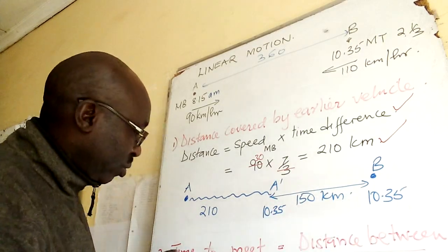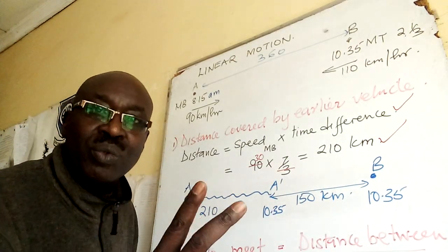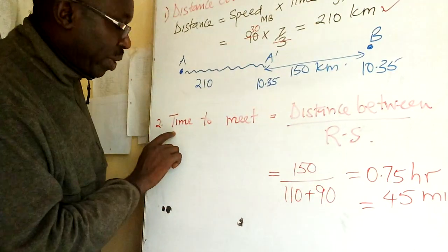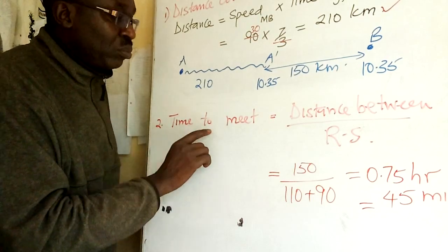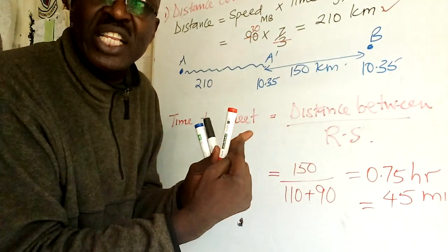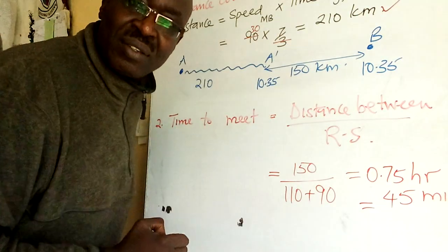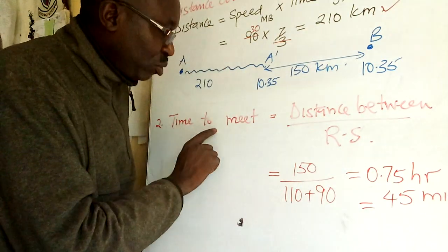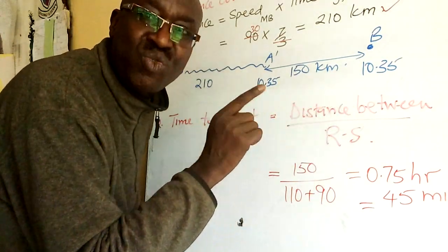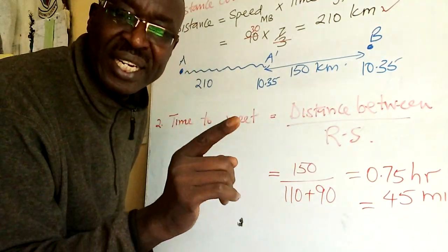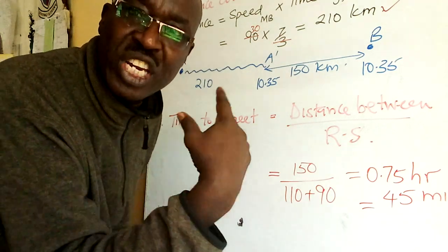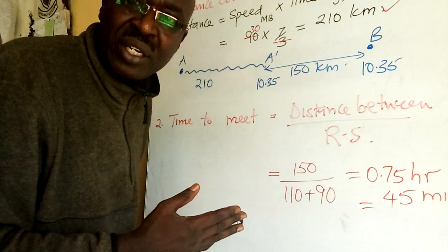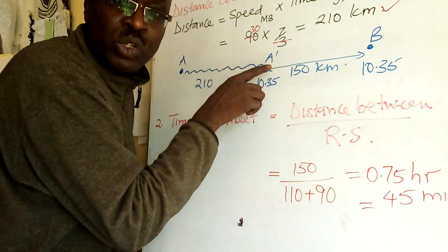Number two: time to meet. There are two methods but I'm giving you the direct one. Time to meet is always distance between the two vehicles divided by relative speed.